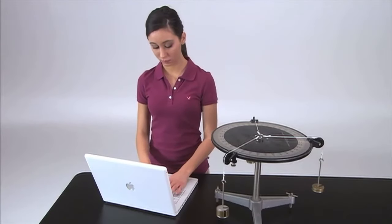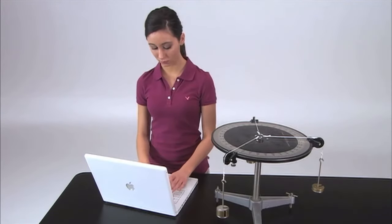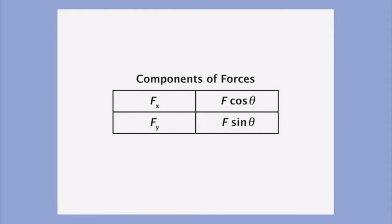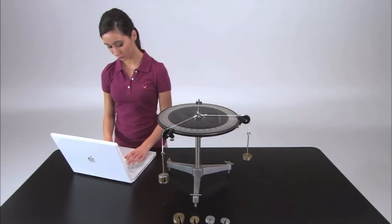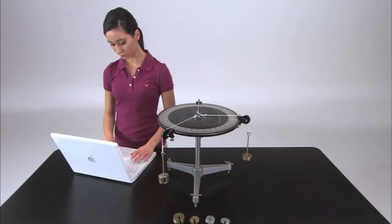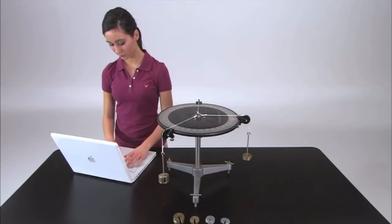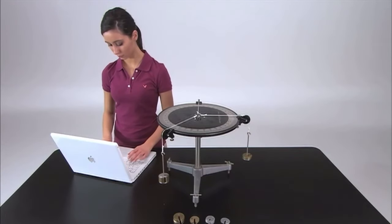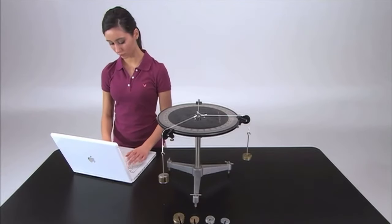Next, you will calculate the actual values of the magnitude and direction of the resultant. Calculate and record the magnitudes of the X and Y components of the two applied forces. Add the X components of the two applied forces to find the X component of the resultant force. Add the Y components of the two applied forces to find the Y component of the resultant force. Record the values.